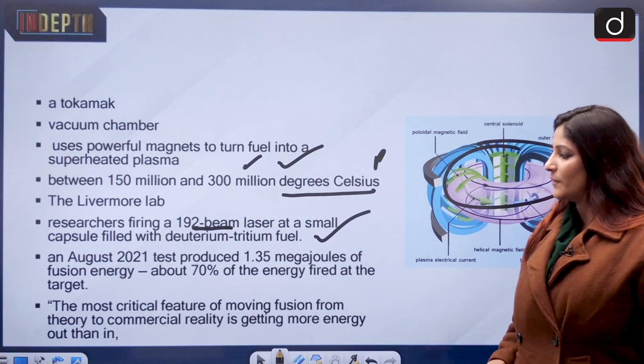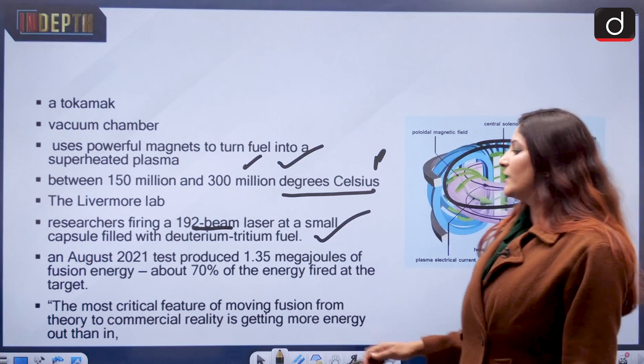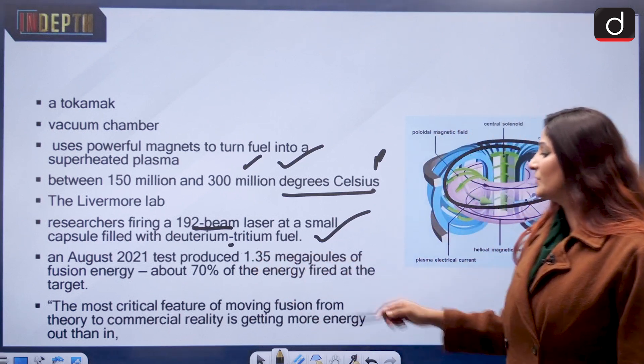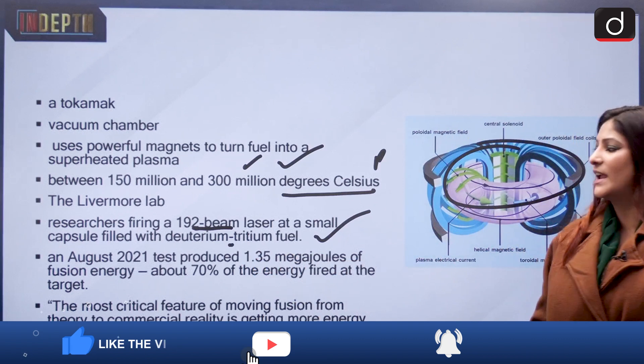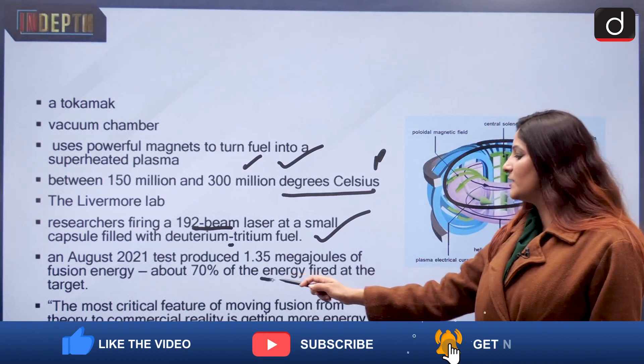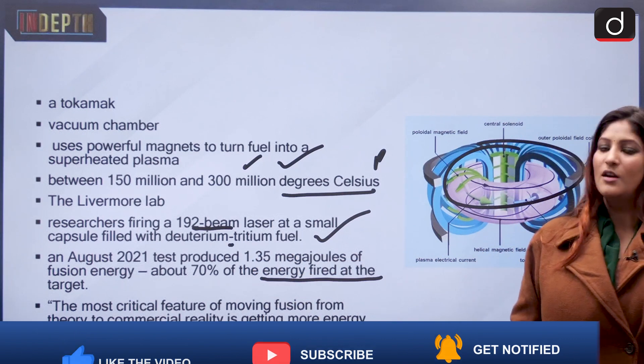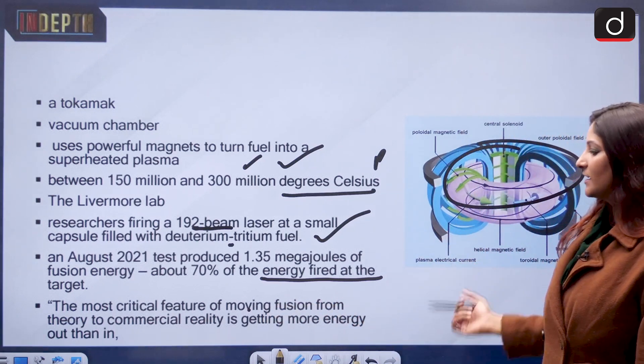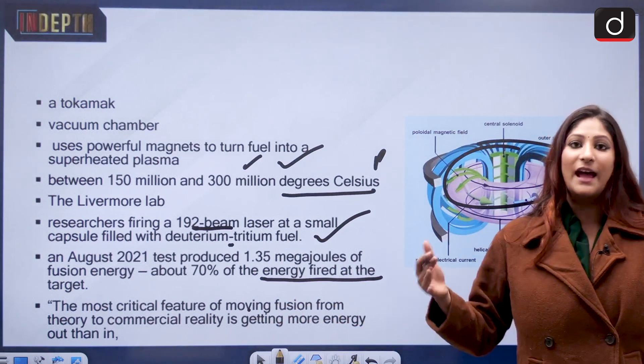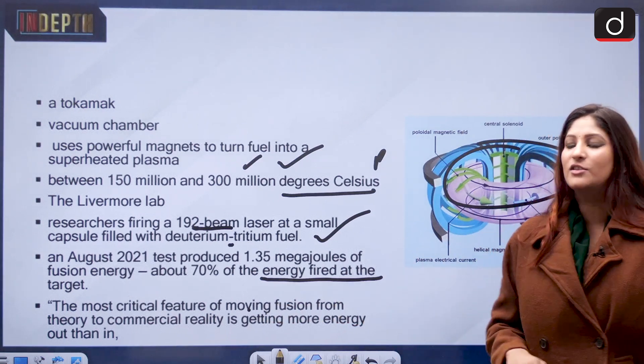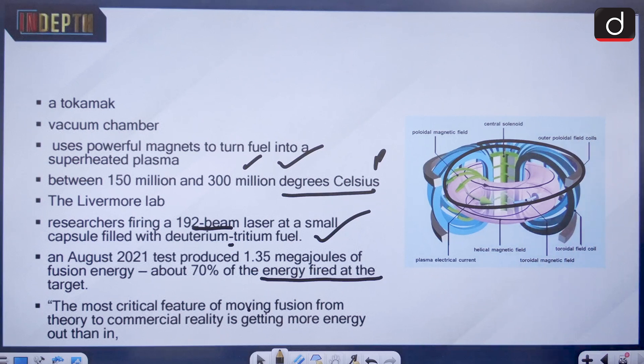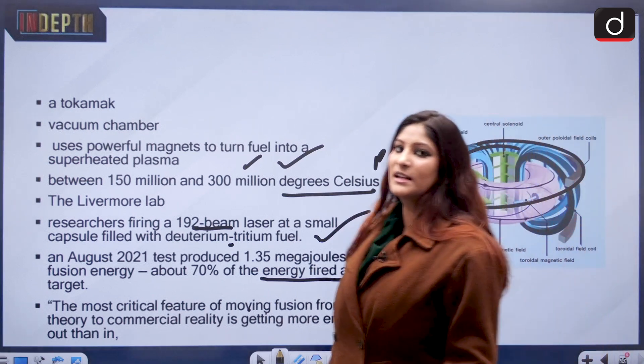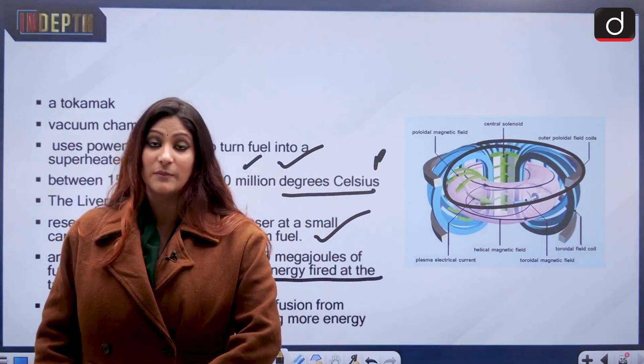In August 2021 tests produced 1.35 megajoules of fusion energy, which is about 70 percent of the energy fired at the target. The most critical feature of moving fusion from theory to commercial reality is getting more energy out than in, so we are in a net energy gain. These are the important things that we needed to study.